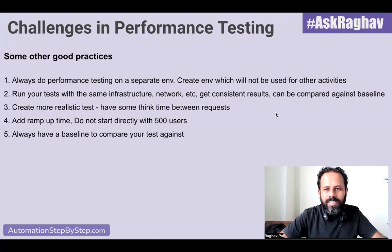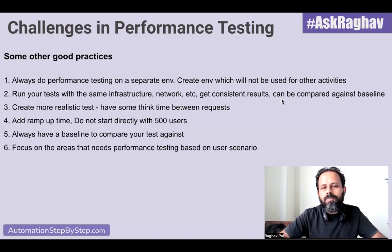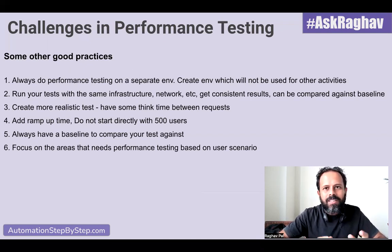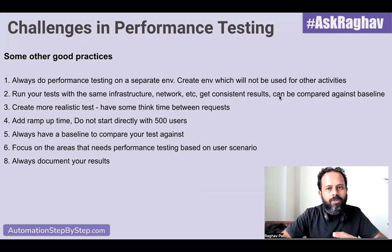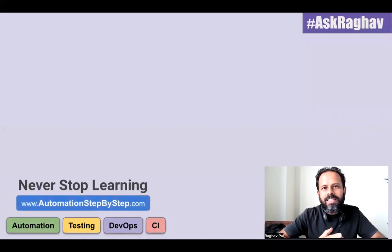Always have a baseline to compare your test against. If you run your test and get an average time, mean time, median time, or latency, you need something to compare it against to say whether it is good or bad. Always have a baseline so you can say this performance is better or not as good as per the baseline. Focus on the areas that really need performance testing — discuss with your team and client to identify actual areas needing testing so you don't waste time testing everything. Always document your results for all user loads and communicate them with your team.